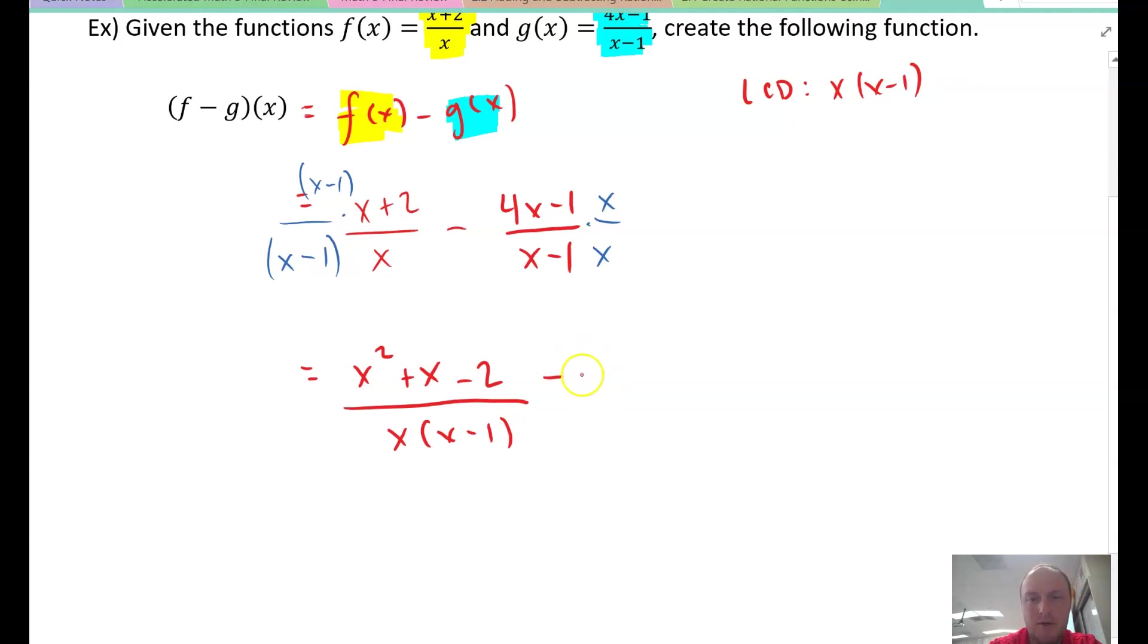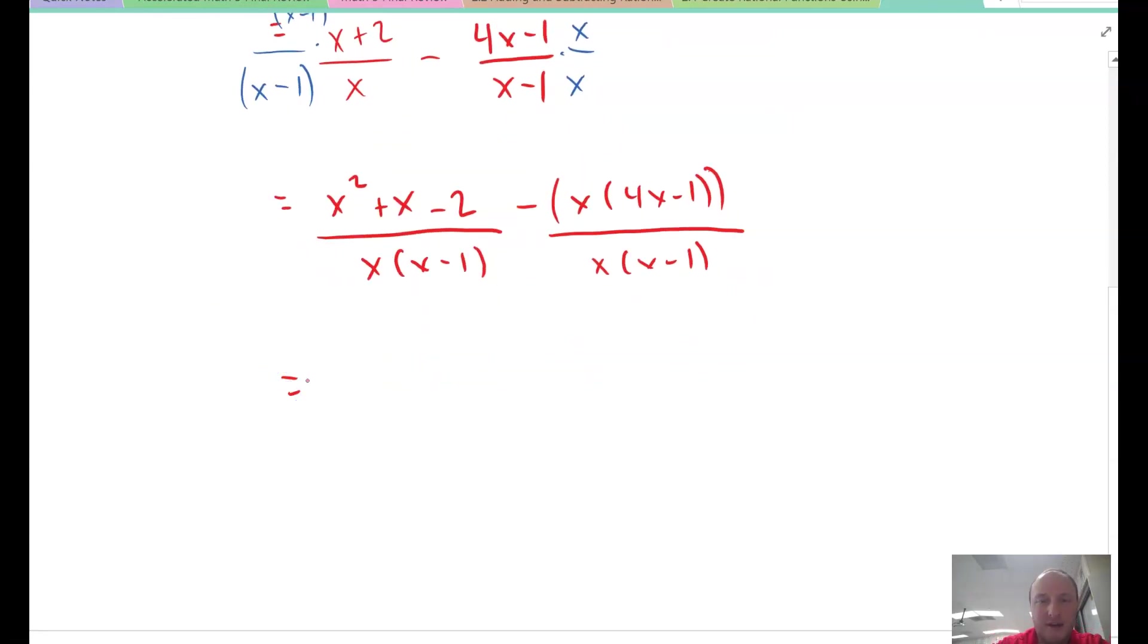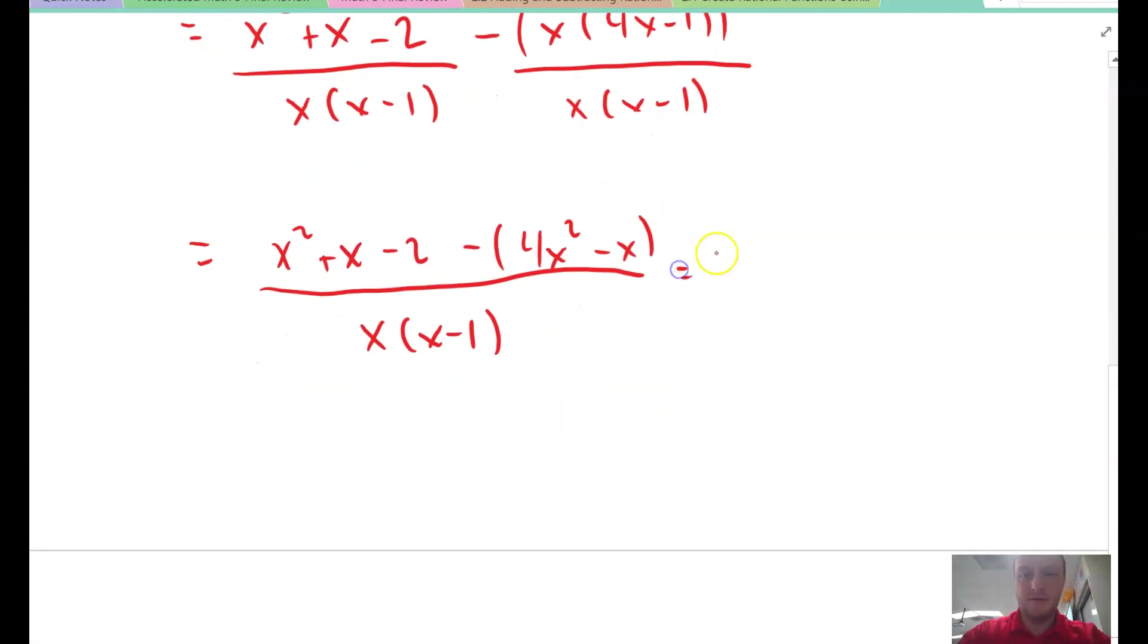Minus, in parentheses, x times 4x minus 1, all over x times x minus 1. So we have x squared plus x minus 2 minus 4x squared minus x over x times x minus 1. We're going to change the signs on the second terms. When combined with our x squareds, we get negative 3x squared plus 2x minus 2 all over x times x minus 1. Here's our new function.